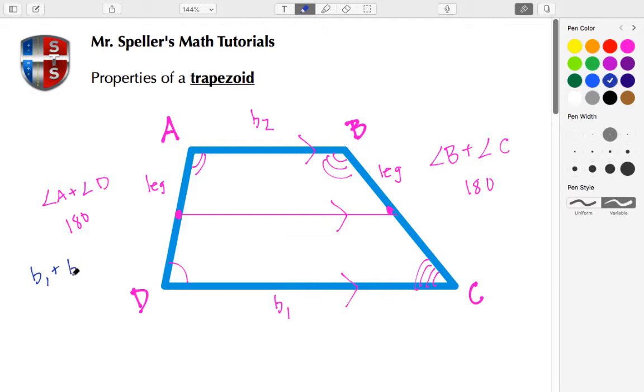So here if we take base one, or b₁, plus b₂, and divide that by two, that gives us our mid-segment.